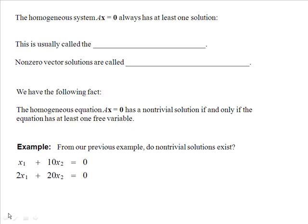The homogeneous system Ax equals 0 always has at least one solution, and we usually call this the trivial solution — the solution where x equals the zero vector. Non-zero vector solutions are called non-trivial solutions.